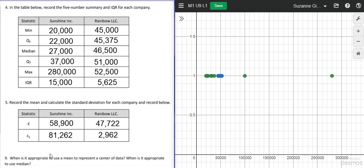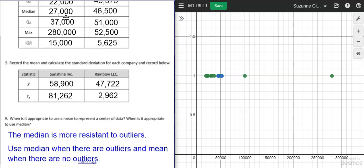So the question then leads us to ask, when is it appropriate to use mean to represent the center of the data, and when is it appropriate to use the median? We can see that the median gives a more accurate number for the center whenever there's an outlier.